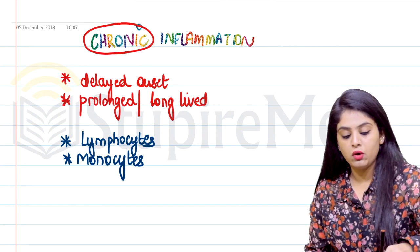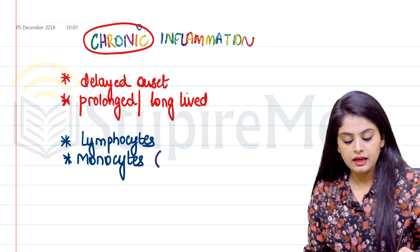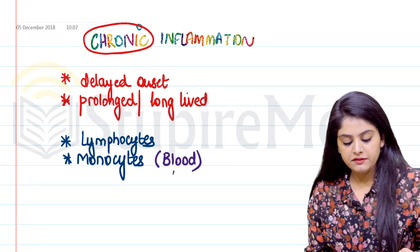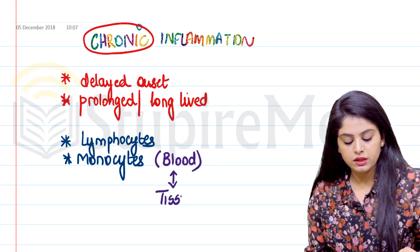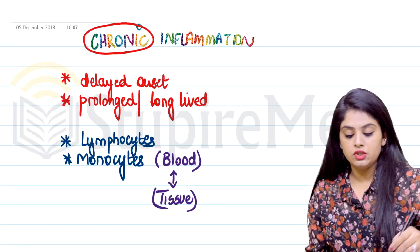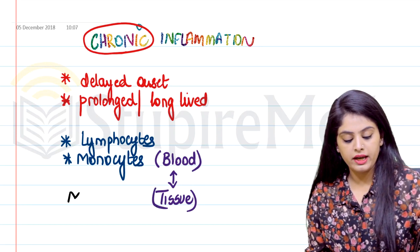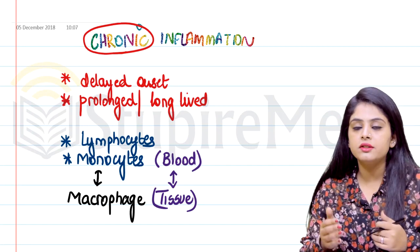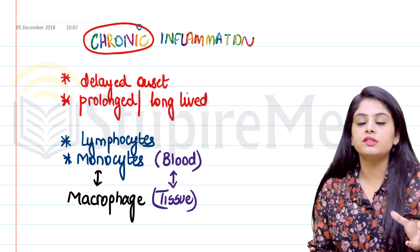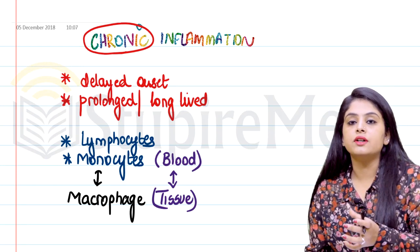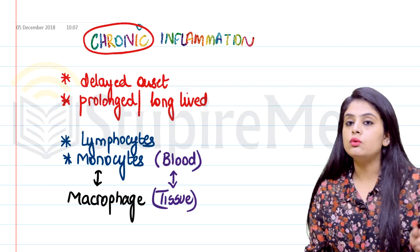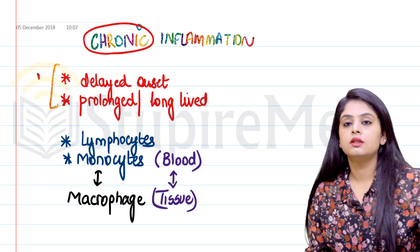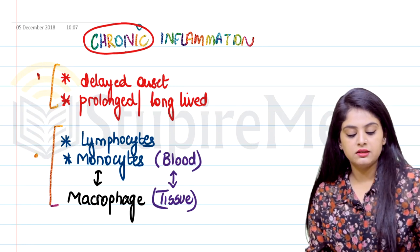Till the time the monocyte is present in the blood, we call it a monocyte. But if the same cell comes out into a tissue, the terminology changes — it is now known as a macrophage. So macrophage and monocyte are synonyms; only the location is different. The monocyte is in the blood and the macrophage is in the tissue. We have now covered two important aspects of chronic inflammation: the duration and the cells.